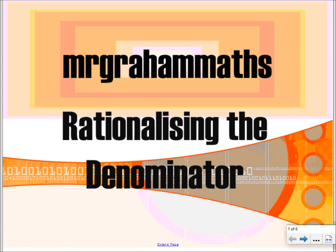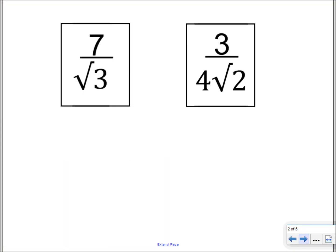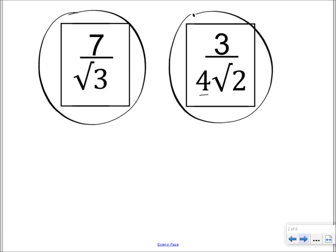In this video, we're going to have a look at how to rationalize the denominator. Now, something with an irrational denominator could look like that, where the denominator is just the root of something, or it could also appear in that form, where you've got a denominator which is a bit more complex, which has maybe a whole number part coupled with a root of a number.